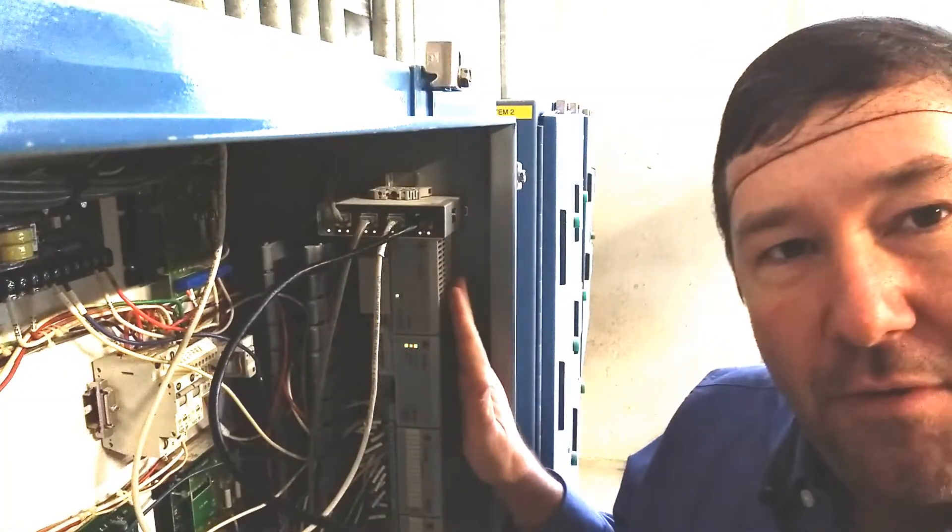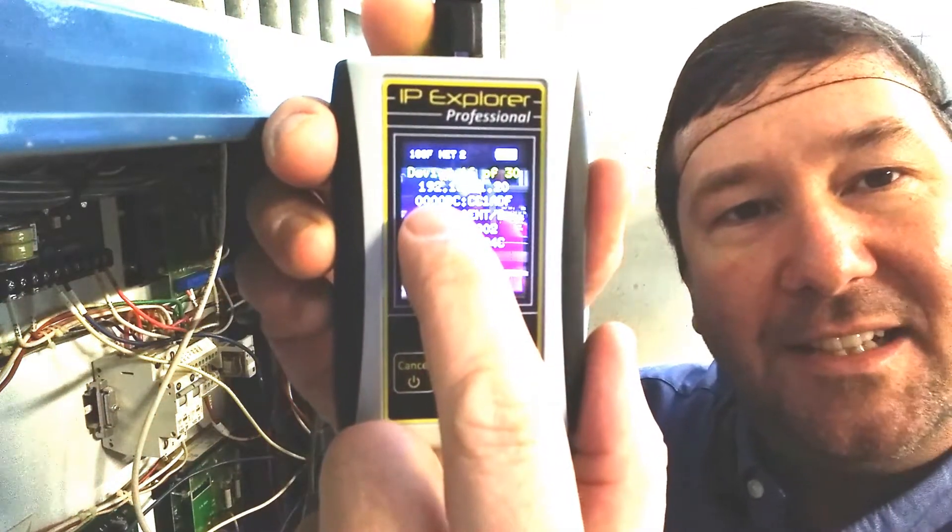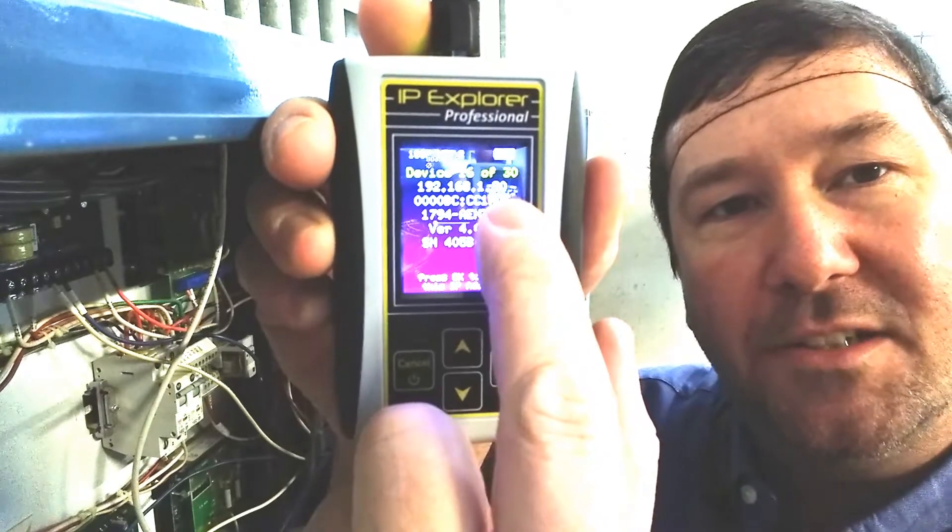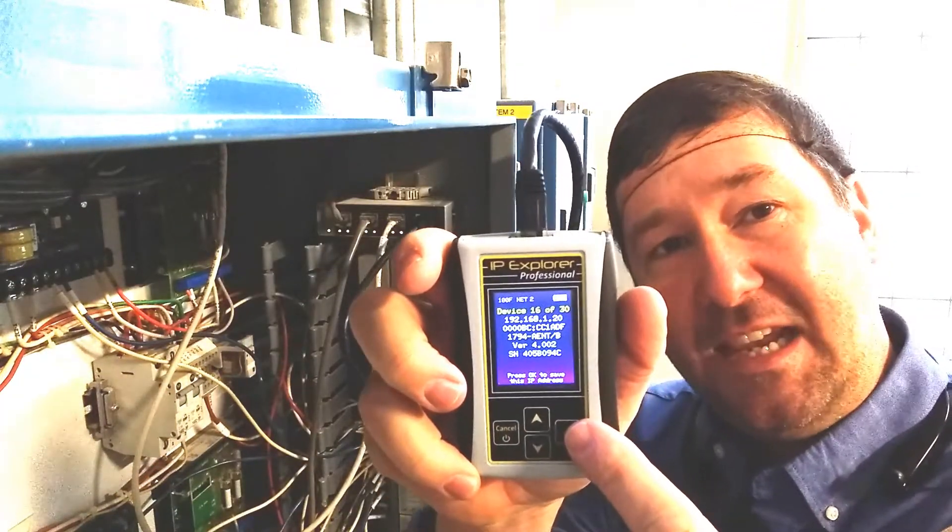So we have found the 1794FlexIO module. And so that tells me that its IP address is 192.168.120. I'll put a link to the PLC tools SIM-IPE in the description.